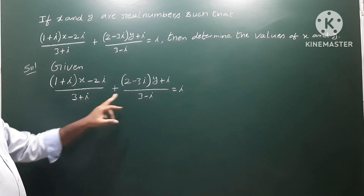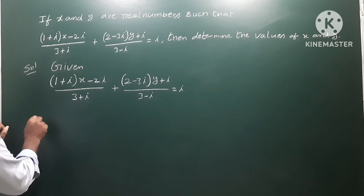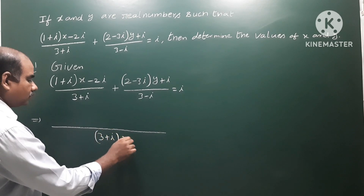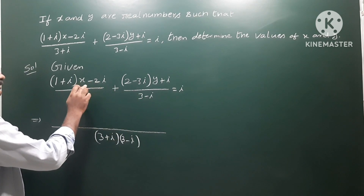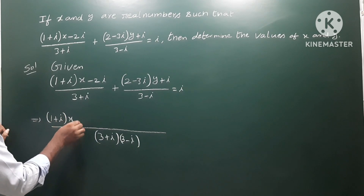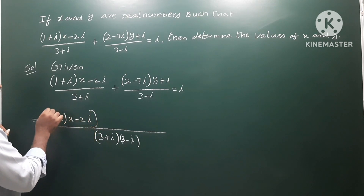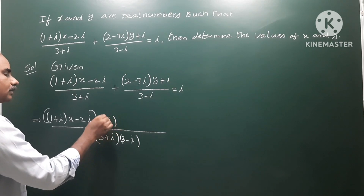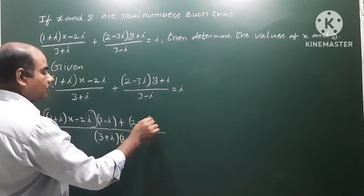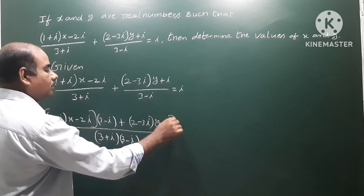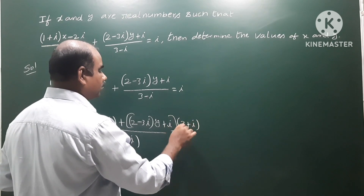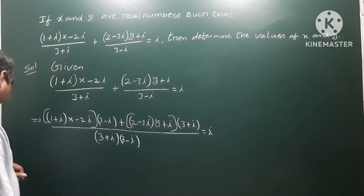The LCM is (3+i)(3-i). So multiplying: left side has (3-i) and right side has (3+i). So (1+i)(x-2i)(3-i) plus (2-3i)(y+i)(3+i), all equal to i times (3+i)(3-i).